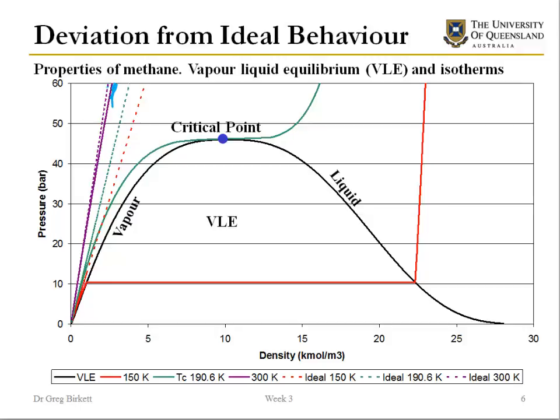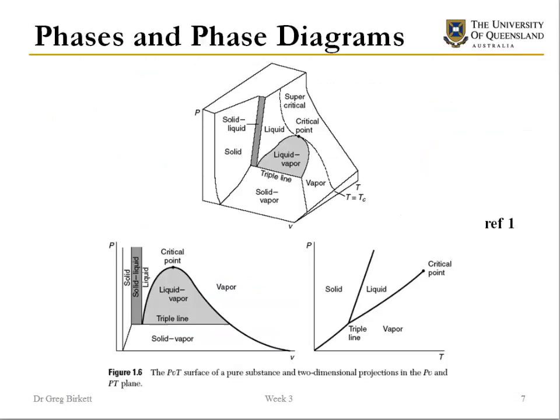At 190 Kelvin, which is near the critical point, and then at 150 Kelvin which is well below the critical point, we start seeing really big deviations from ideal gas behaviour. At 150 Kelvin we're getting condensation from the vapour phase to the liquid phase, and as we increase the density we see very strong repulsion happening. None of these things can happen for an ideal gas.